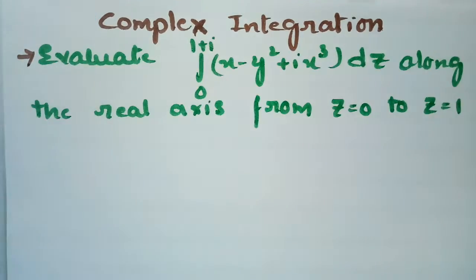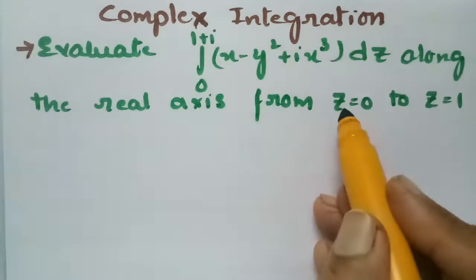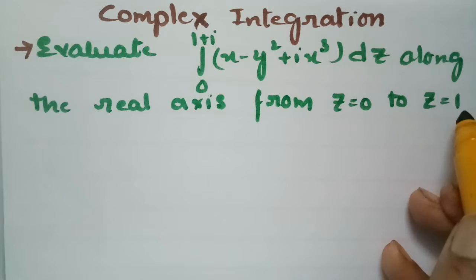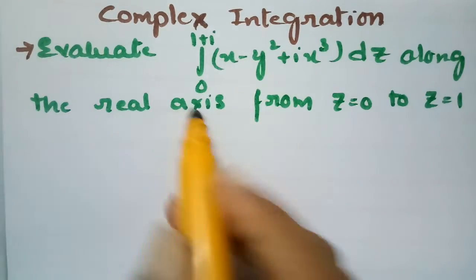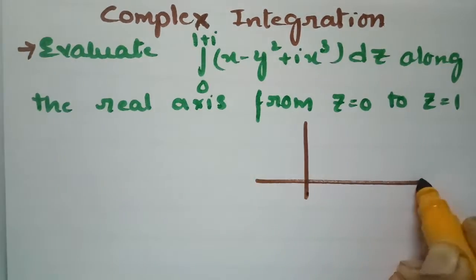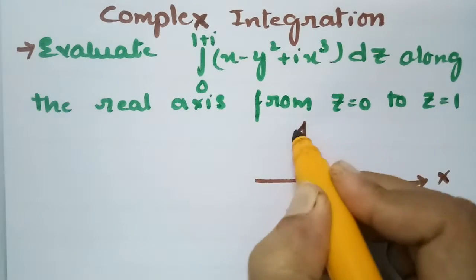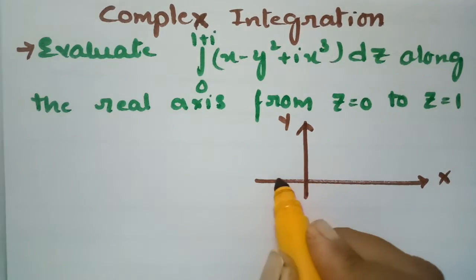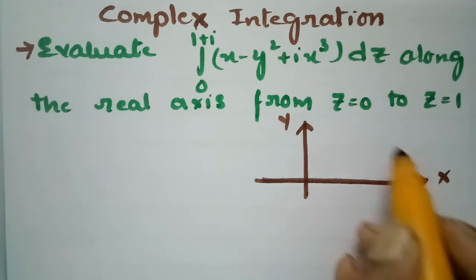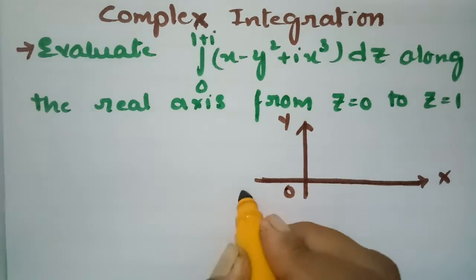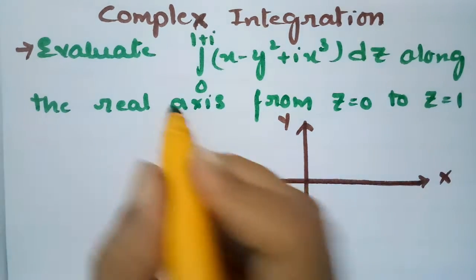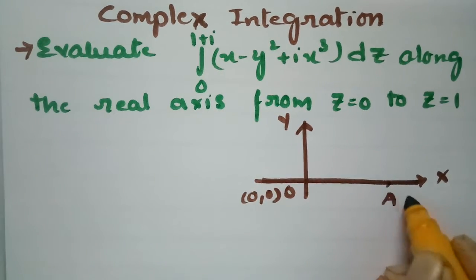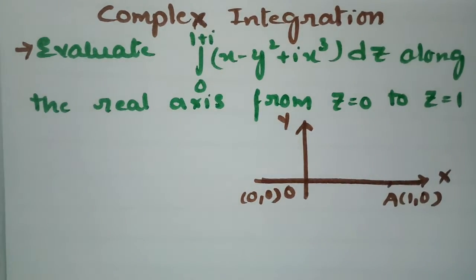So this is the problem we have to evaluate along z = 0 to z = 1 on the real axis. The real axis is nothing but the x-axis. So this is the x-axis and this is the y-axis. Along the real axis, z = 0 is the origin (0, 0) and z = 1 gives the point (1, 0). So we are talking about only the real axis.